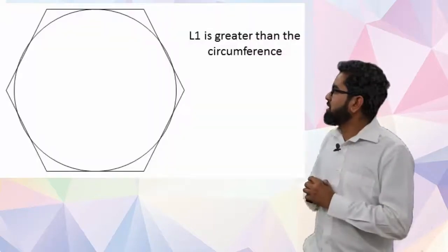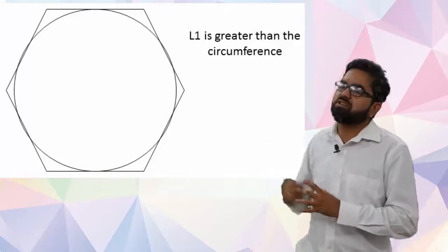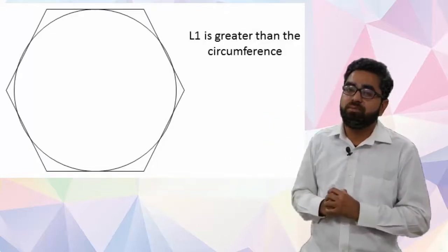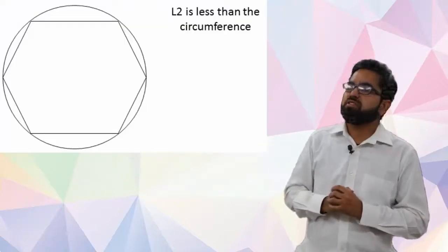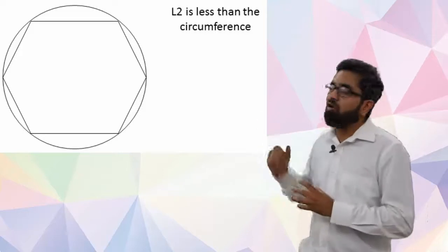Now let's observe: if you see the polygon which is circumscribing the circle, that will always have perimeter more than the circumference of the circle. Similarly, the polygon which is inscribed inside the circle will always have perimeter less than the circumference of the circle.